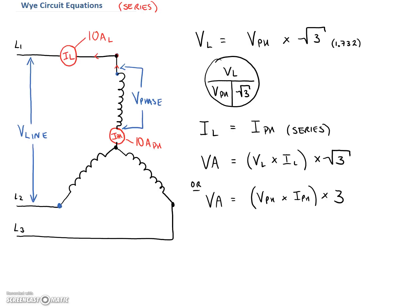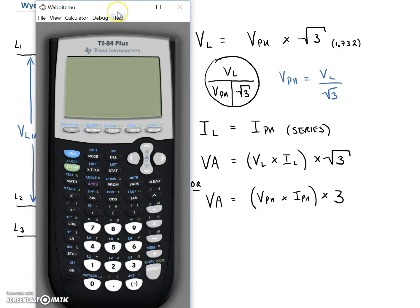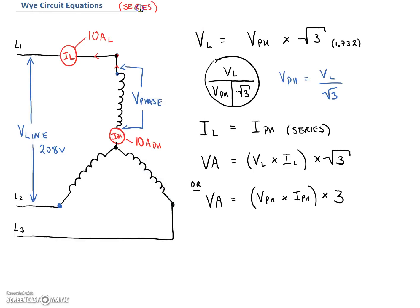Let's take an arbitrary voltage — 208 volts for our line voltage. If we want to find our phase voltage, our phase voltage is equal to V_line divided by root 3. So we take 208 volts and divide by the square root of 3. And you can see that the voltage on the phase is going to be 120 volts. So 208 and 120 are always going to go together. Our phase voltage here is going to be 120 volts on the phase.